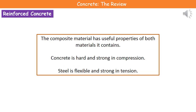This composite material has useful properties from both materials it contains. Concrete is hard and strong in compression — when you're pushing down on it. Steel, which forms the mesh, is flexible and strong in tension — when you're pulling on the ends. So our composite material has the properties of being hard and strong in compression, as well as flexible and strong in tension, making it a better material overall.